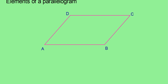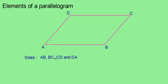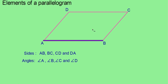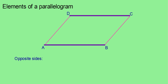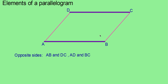Now let us discuss the elements of a parallelogram. Here you have a parallelogram ABCD. You can find 4 vertices, 4 angles, and 4 sides. The sides are AB, BC, CD, and DA. The angles are angle A, angle B, angle C, and angle D. Looking at sides AB and DC — they are just opposite to each other, so we can call those a pair of opposite sides. Similarly, AD and BC are also a pair of opposite sides.